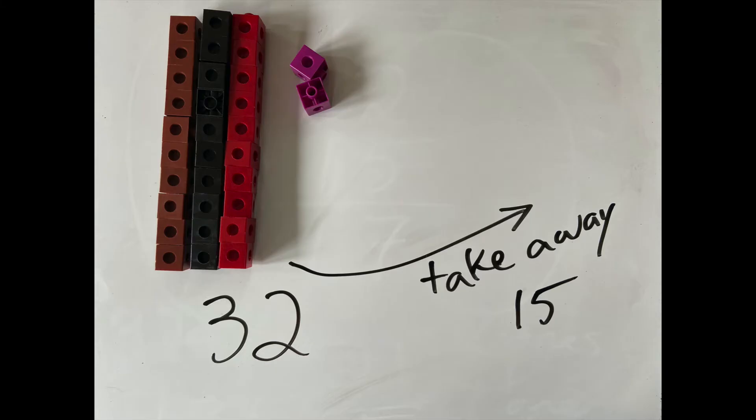when we build 32 out of the blocks and try to take away one ten and five ones, which is what 15 means, we can take away the one ten, but we don't necessarily know how to take those five ones away from the two ones. And what's nice here is that the groupings, the group of ten, can be broken up into ones.